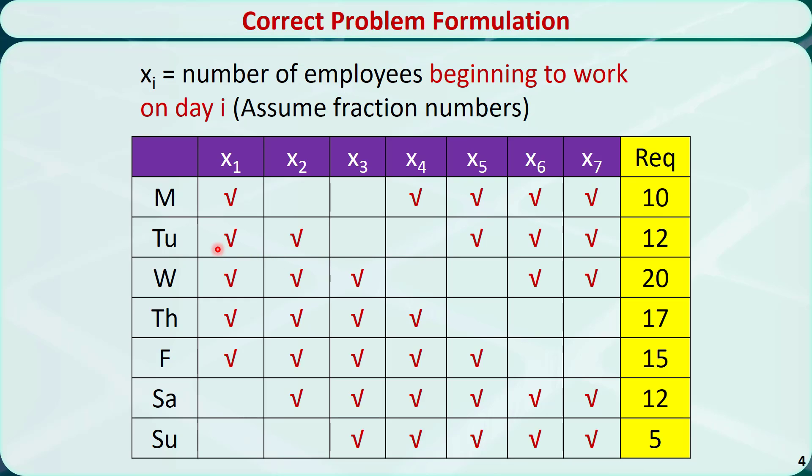The total number of employees working on Tuesday would be x1 plus x2 plus x5 plus x6 plus x7. It would be greater than or equal to 12, and so on.